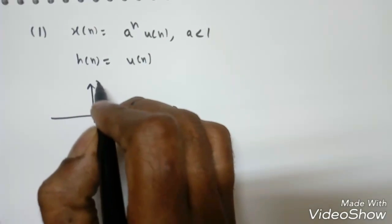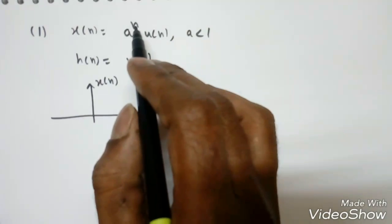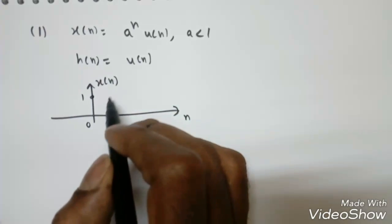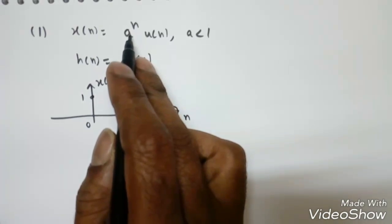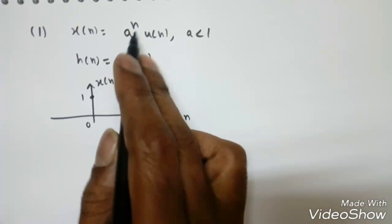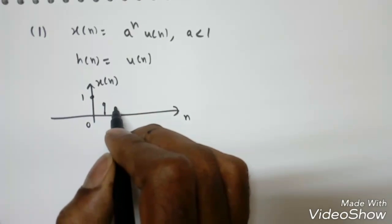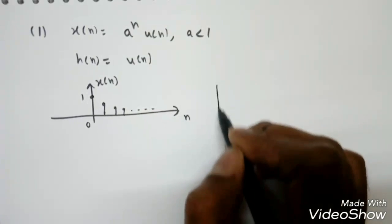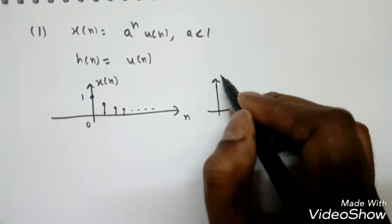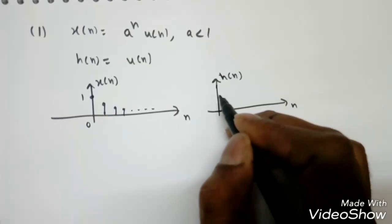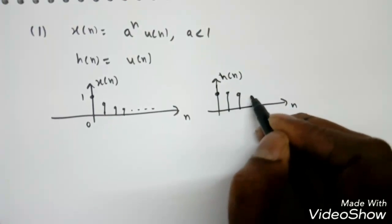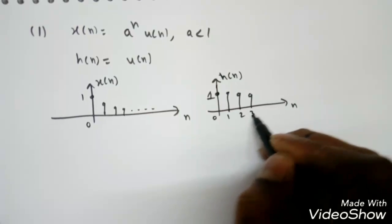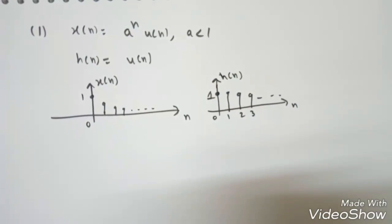Plotting x(n): at n = 0, a^0 = 1, so it starts at 1. Since a < 1 — say 0.5 — the values decrease with each step. For h(n) = u(n), the amplitude is constant for all n ≥ 0, giving a flat sequence at values 0, 1, 2, 3, and so on.